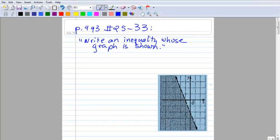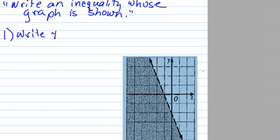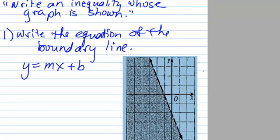So we start with the boundary line. Step one would be write the equation of the boundary line. Now, luckily for us, boundary lines are lines, and the simplest form of writing the equation of a line is y equals mx plus b. So if we can just figure out what the slope of this line is and what the y-intercept is, then we'll be good to go and we'll have the equation of the boundary line.